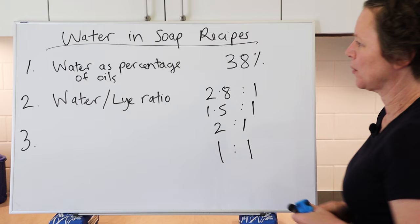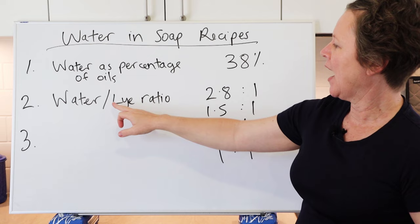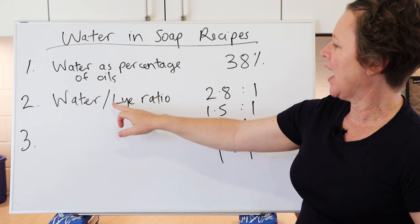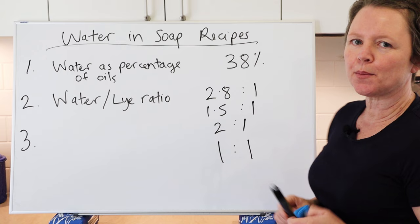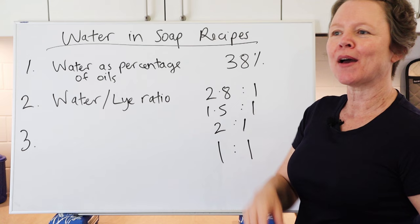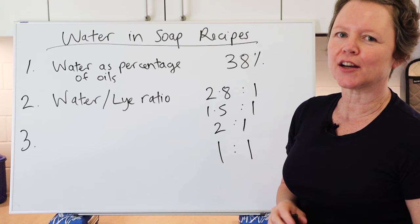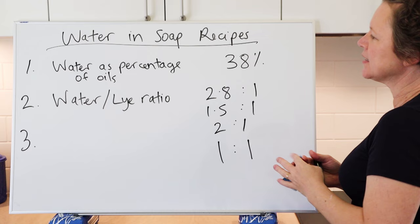If you want to use the water-to-lye ratio method, many soap calculators give you the option. You'd select that method and enter your desired ratio — 2:1, or whatever it might be. For guidance on how much water to use and which ratio to choose, go back to my video on how to formulate and calculate your own soap recipes, which explains how to work out a recipe based on high, medium, or low water amounts.